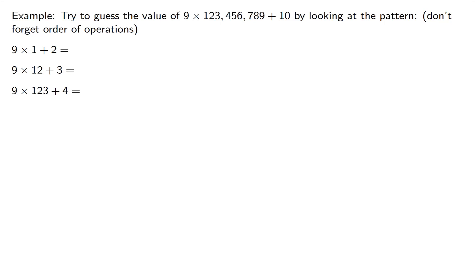Let's look at another interesting pattern. Here's a large problem: 9 times this large number plus 10. The point is we want to see a pattern and try to generate one based on how it's set up. Take a look at these three problems — the hope is that you can see the large problem is a continuation: 9 times 1 plus 2; 9 times 12 plus 3; 9 times 123 plus 4; and up here it's 9 times 123456789 plus 10. Let's figure out the answer without just punching the large problem into a calculator — look for the pattern, and remember order of operations: multiplication comes first.